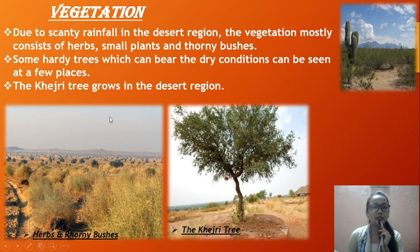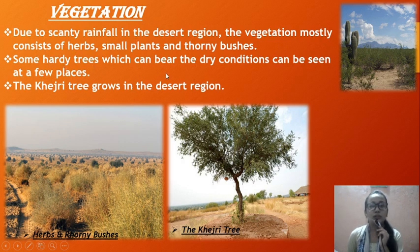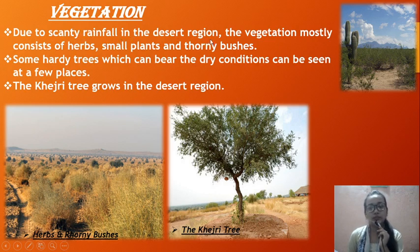Due to scanty rainfall in the desert region, the vegetation mostly consists of herbs, small plants, and thorny bushes. Scanty means a very less amount of rainfall in the desert region, and only vegetation that can bear this dry weather condition can grow here.